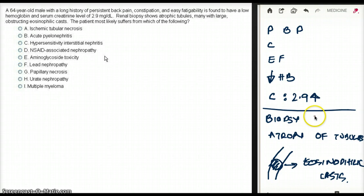Let's first focus on the generalized kind of presentation. Easy fatigability, constipation, then decrease in hemoglobin, and persistent back pain. Seems like multiple myeloma. Multiple myeloma, persistent back pain, that goes.